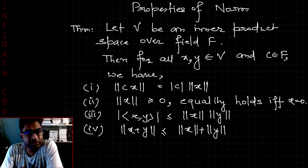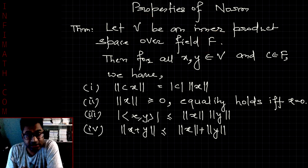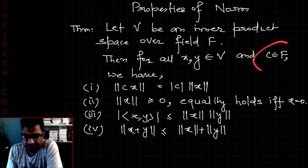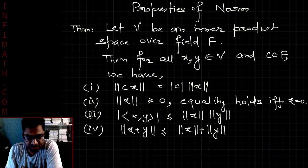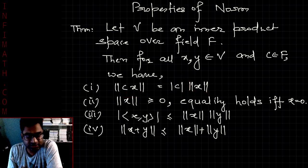In this video we will see the properties of norm. Suppose we have an inner product space V defined over the field F. If we consider any two vectors in V and a scalar C in the field, then the norm of the scalar multiple Cx will be equal to the modulus of C times the norm of vector x.